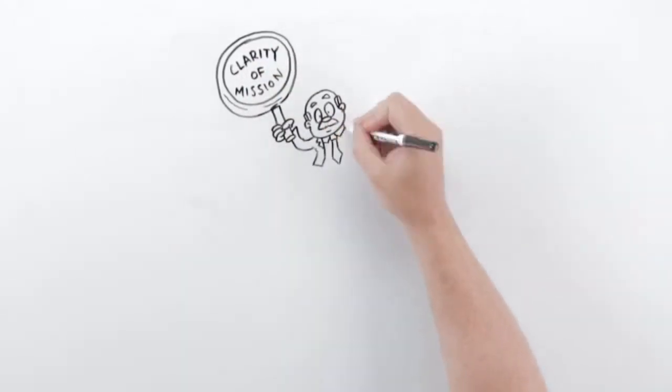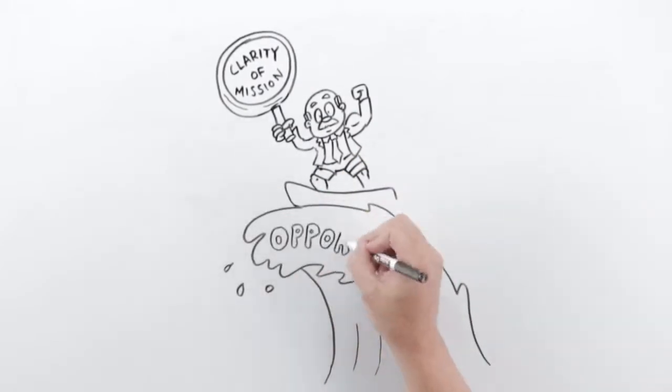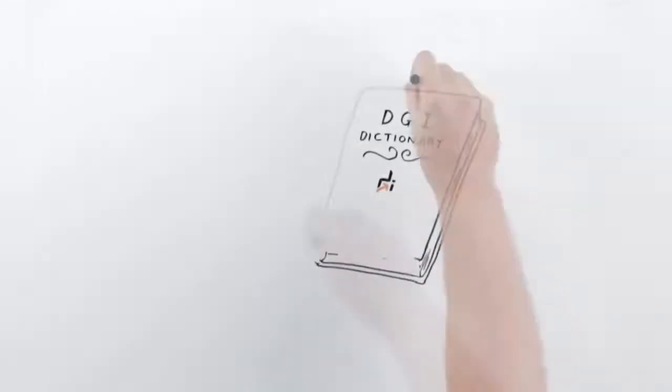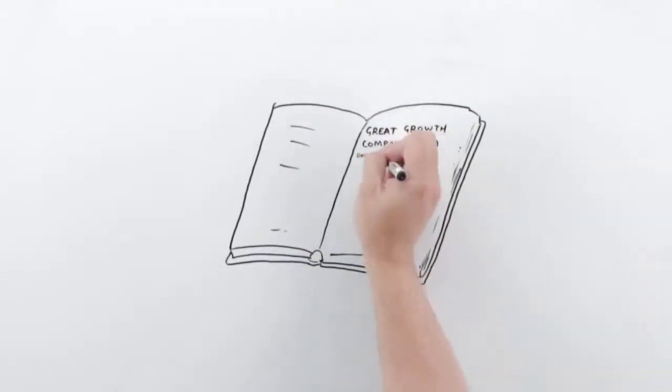Our first tenet defines the underlying drivers of long-term value creation inherent in great growth companies. These include a clarity of mission, a strong management team, and a tidal wave of opportunity. However, the defining characteristic of a great growth company is a sustainable competitive advantage.